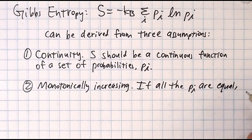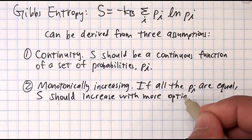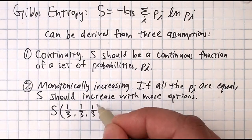Number two, monotonically increasing. If all things are equal, the uncertainty should increase when there are more options.